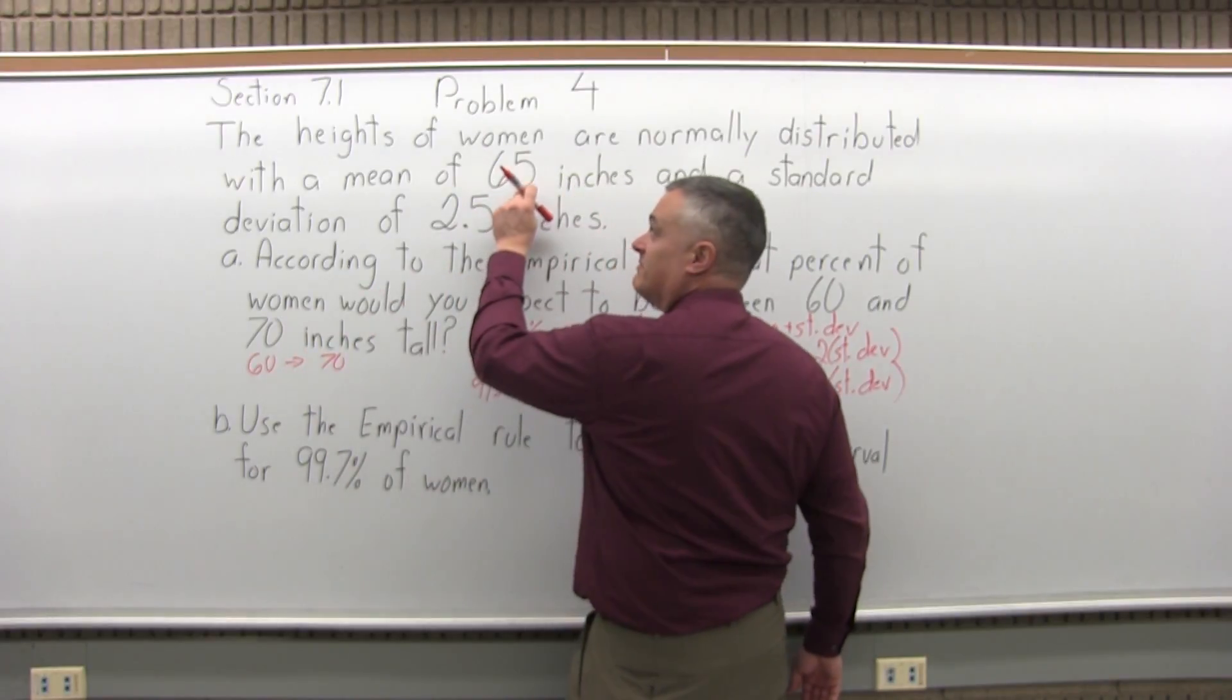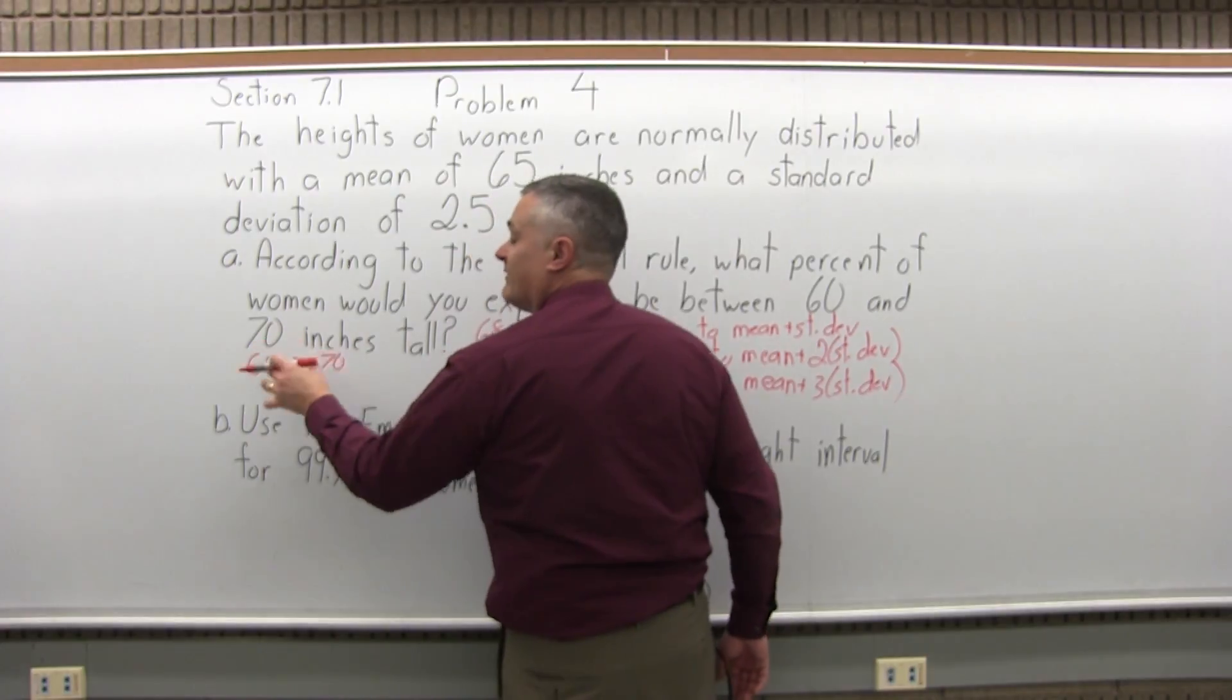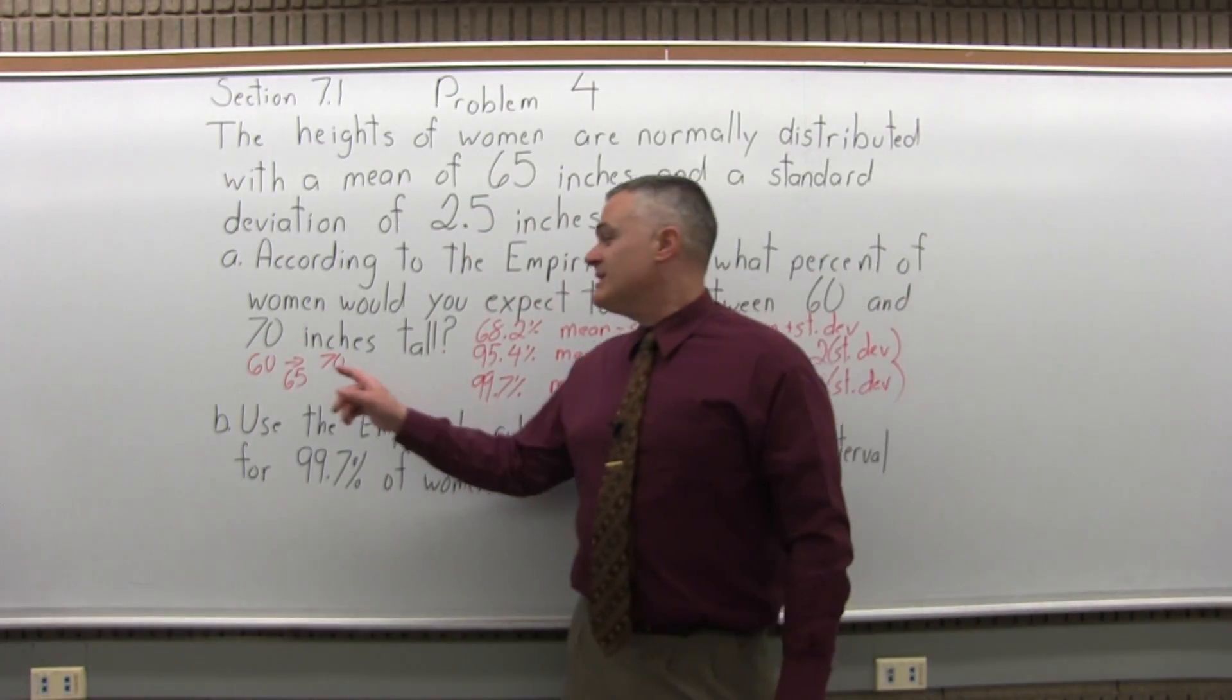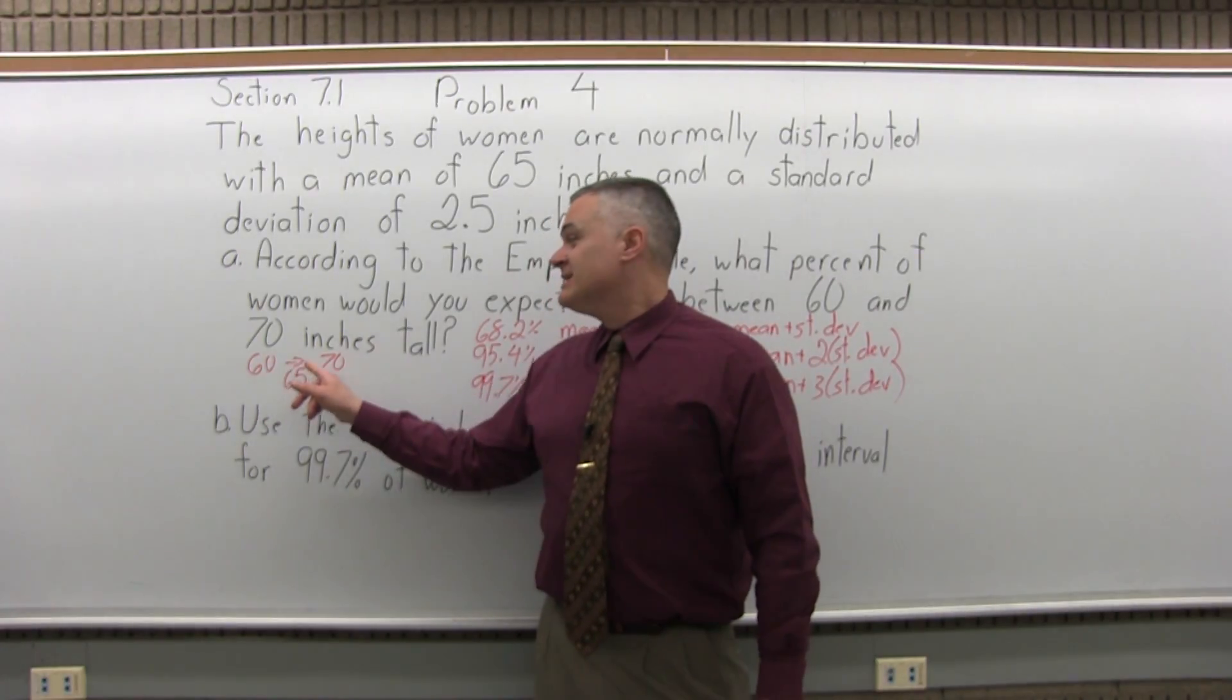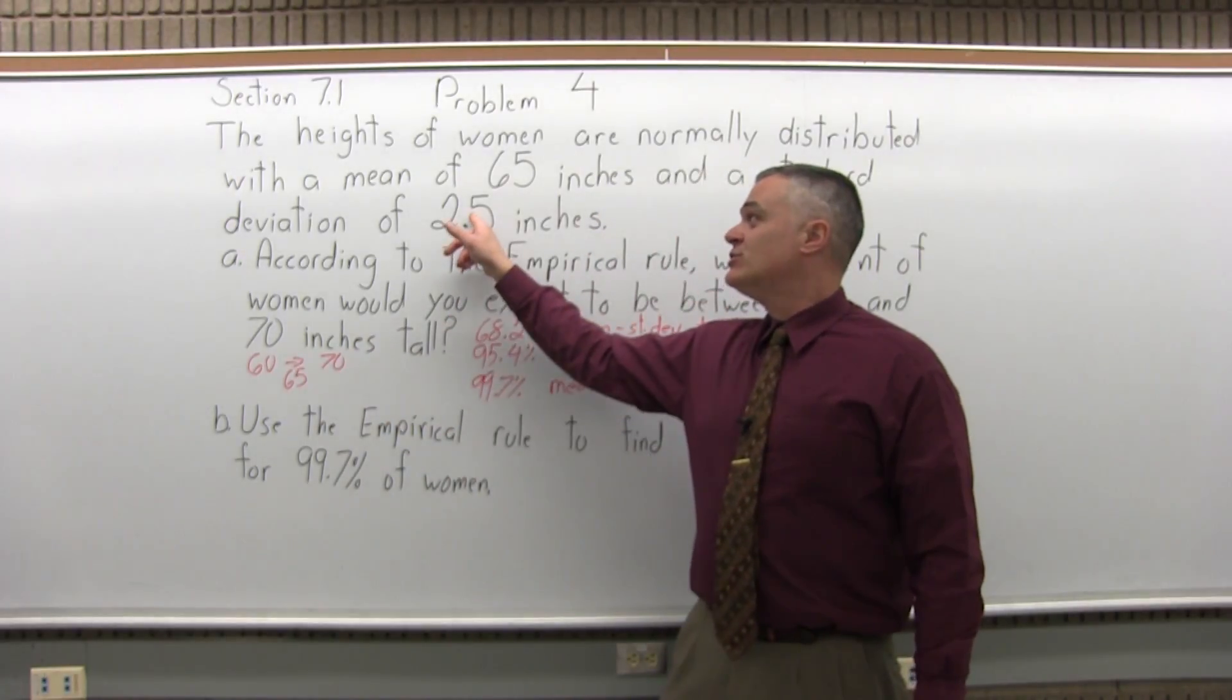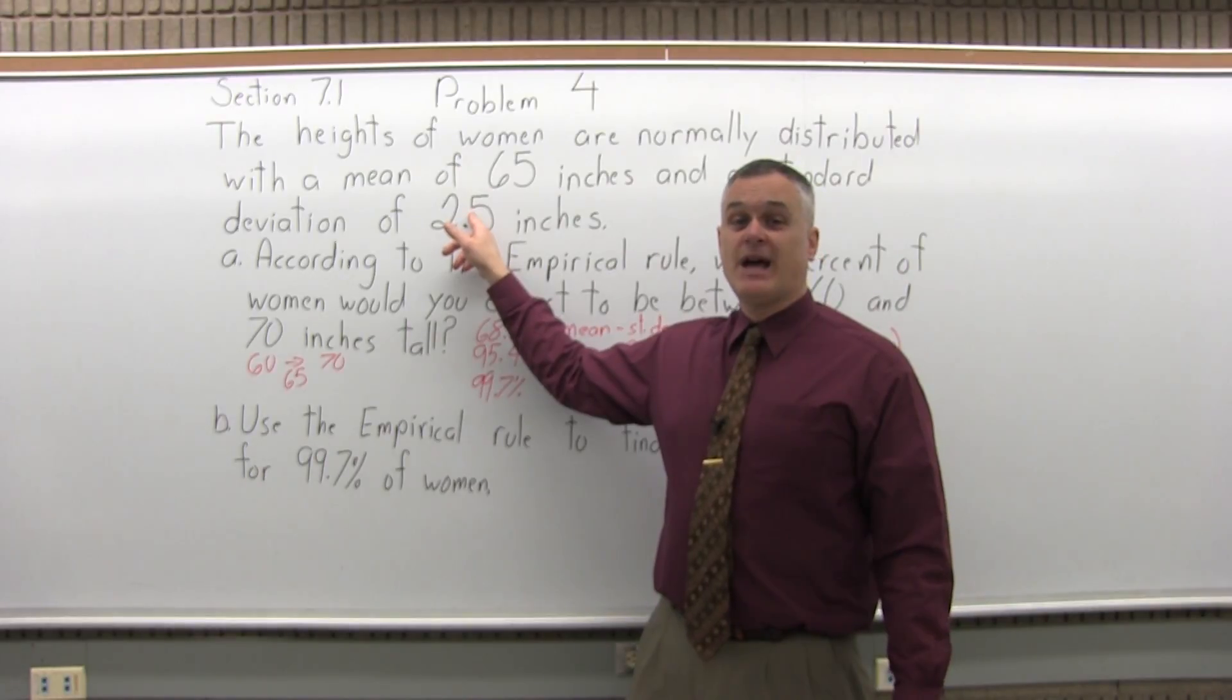Going from 60 to 70, it tells me that the mean is 65. So 65 is in the middle between 60 and 70. 65 is the middle value, 60 is 5 less, 70 is 5 more. So 5 is two standard deviations. 2 times 2.5 is 5.